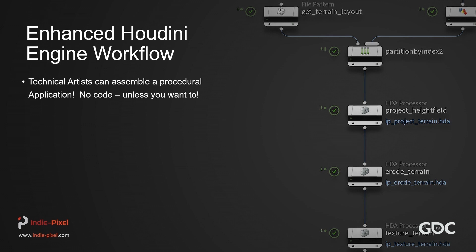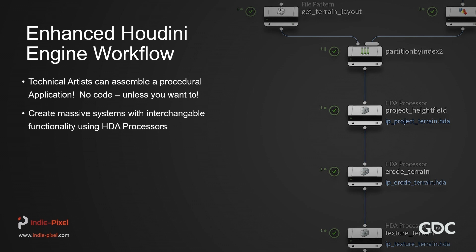What we have now is a more enhanced Houdini engine workflow — a technical artist can assemble a procedural application with no code unless you really want it. They have Python TOP nodes, and you can still use VEX inside your HDAs to speed things up. We can create massive interchangeable functionality using HDA processors. You can just swap out an HDA processor for a different HDA and rerun your TOP network — everything updates. It's a very non-destructive, massive procedural system.